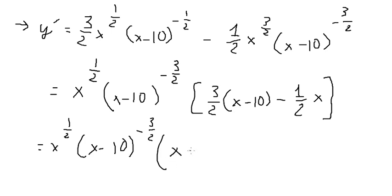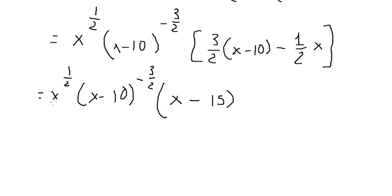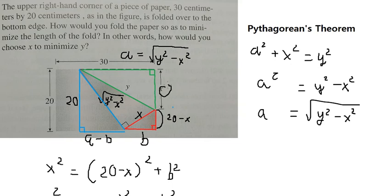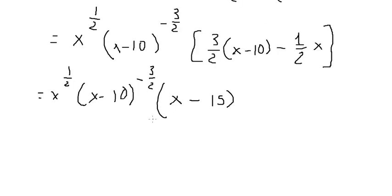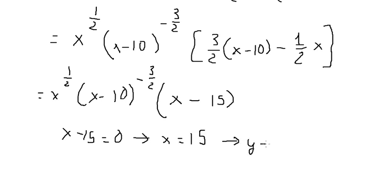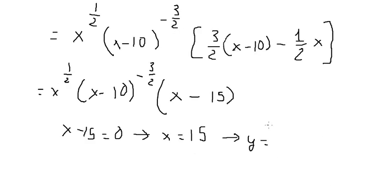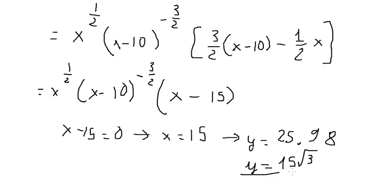From the factorization, we get (s minus 15). If s equals 0, that gives nothing meaningful. Setting s minus 15 equal to 0, we get s equals 15. We can then find the value of Y, which is approximately 25.98, or written exactly as Y equals 15 times the square root of 3. That is the final answer. Thank you for watching.